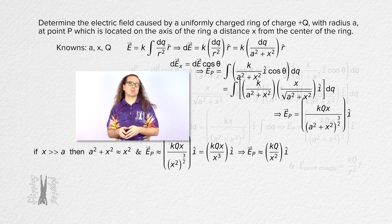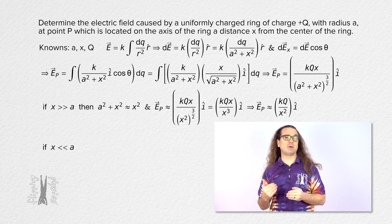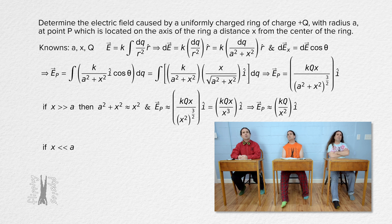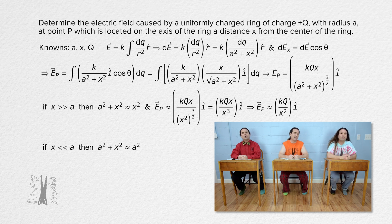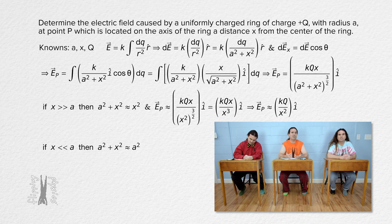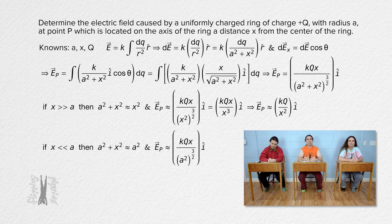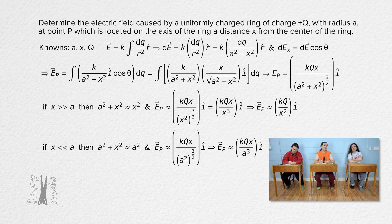If x is much, much smaller than a, then a squared plus x squared is roughly equal to a squared. We can change the parenthetical expression in the denominator to a squared, and a squared raised to the three-halves power is a cubed. This gives a new simplified expression for the electric field at point P, though the full significance of this will become clearer shortly.